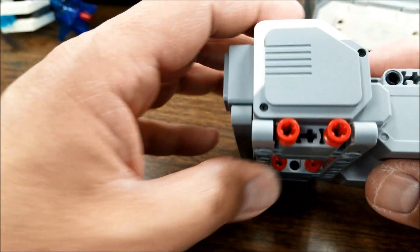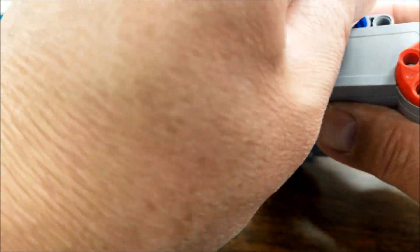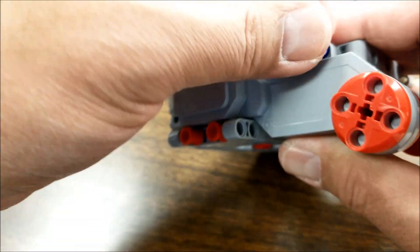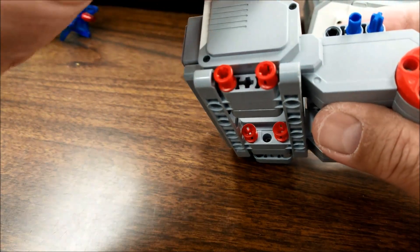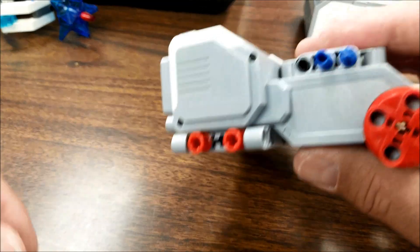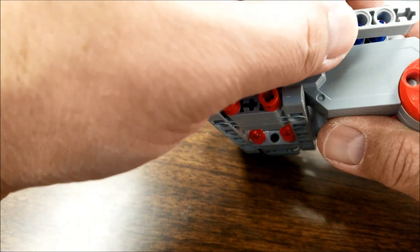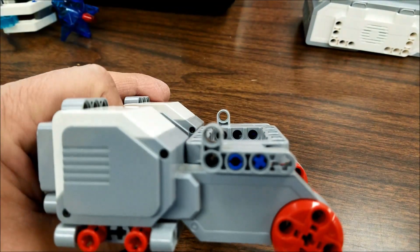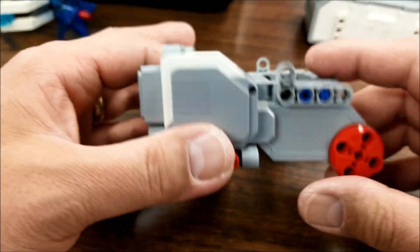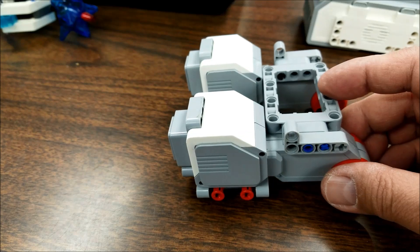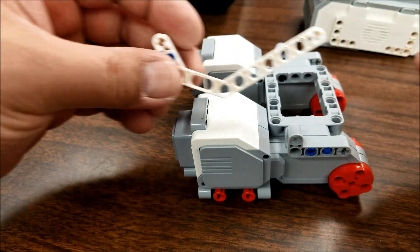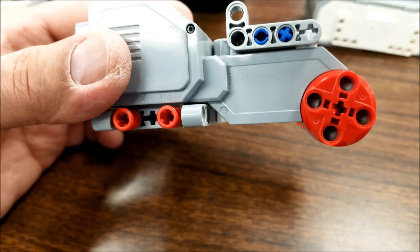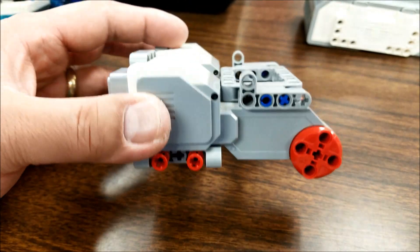We'll flip it around and do the same thing to the other side. So now what we're going to do is we're going to get our J beams ready for us to gear down or gear up. I'm going to actually be making this to gear up.